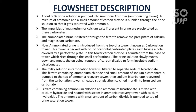The milky solution in the carbonation tower is filtered to separate the sodium bicarbonate. The filtrate containing ammonium chloride and a small amount of sodium bicarbonate is pumped to the top of the ammonium recovery tower. The sodium bicarbonate recovered from the carbonation tower is then heated strongly to form sodium carbonate. The filtrate containing ammonium chloride and ammonium bicarbonate is mixed with calcium hydroxide and heated with steam in the ammonia recovery tower. The ammonia, with a small amount of carbon dioxide, is then pumped back to the top of the brine saturation tower.